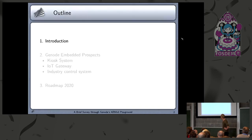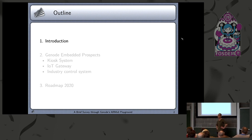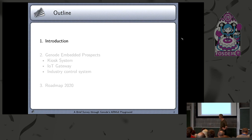Before we come to the actual demonstration, I want to show three different aspects that might be interesting for embedded systems, which you could already use right now with Gnode. First I want to give a short introduction on Gnode's history on ARM and our findings from those experiences. Then I will showcase certain aspects, and then we'll come to a short roadmap for this year related to ARM development.